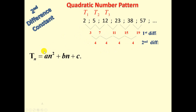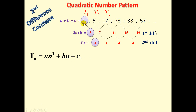The general formula for a quadratic is Tn = An² + Bn + C. Using the formulas we learned: 2A = 4, 3A + B = 3, and A + B + C = 2 (the first term). Starting with 2A = 4, divide both sides by 2, giving A = 2.